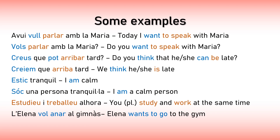The verb estar, as in 'estic tranquil', is used for transient states — for states or health. Right now I am calm, maybe not five minutes from now, but right now I am calm. But 'soc una persona tranquila' means that I am a calm person — that is who I am, I am always a calm person.